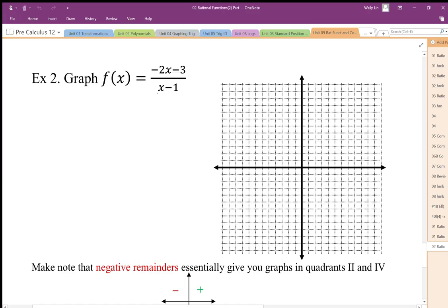To do that we're going to divide these two expressions. So x minus 1 into negative 2x minus 3. Dividing this in, it's going to go in negative 2 times. So negative 2 times x gives me negative 2x plus 2. Subtract those, those cancel out, I end up with a remainder of negative 5.